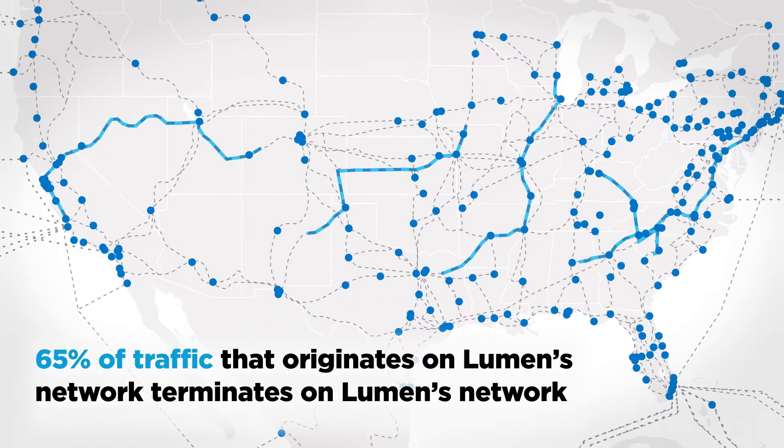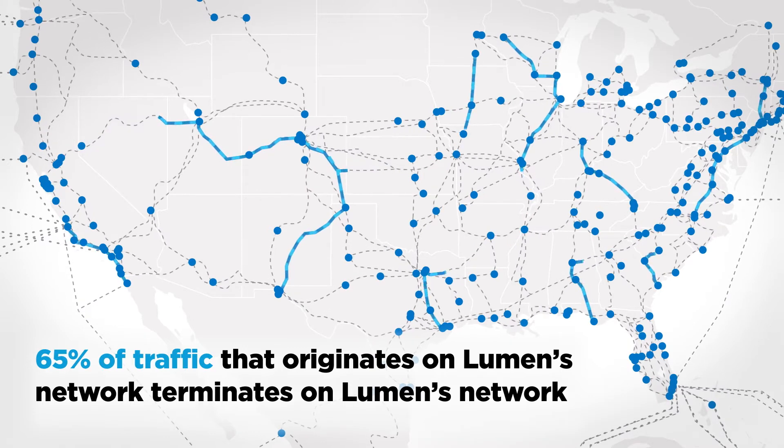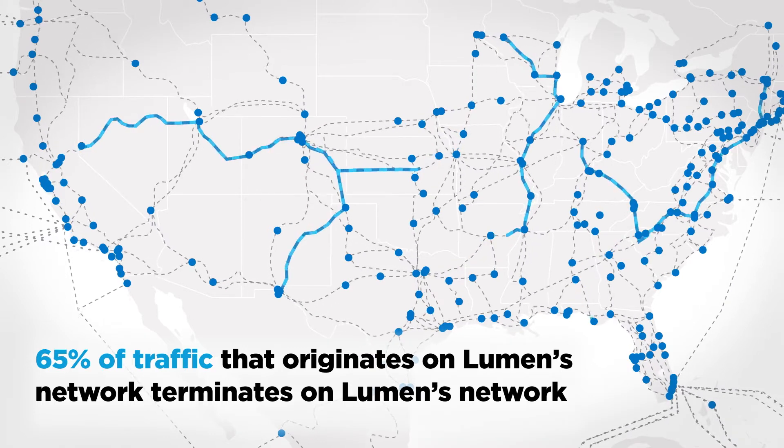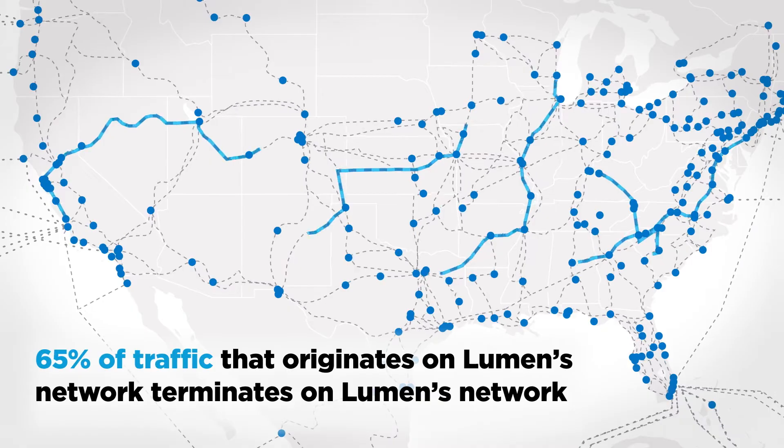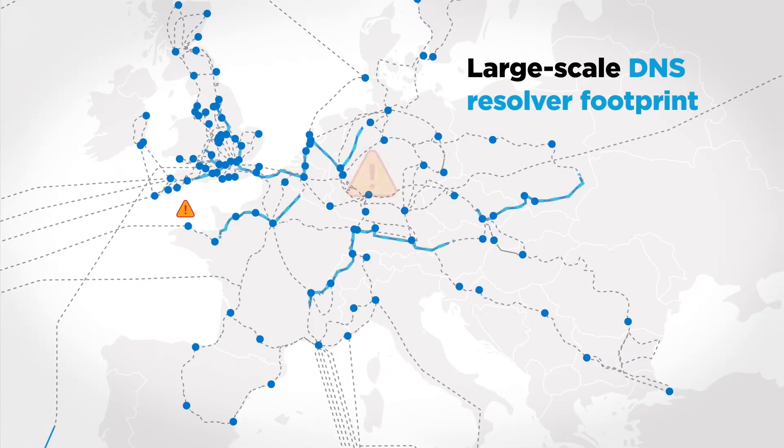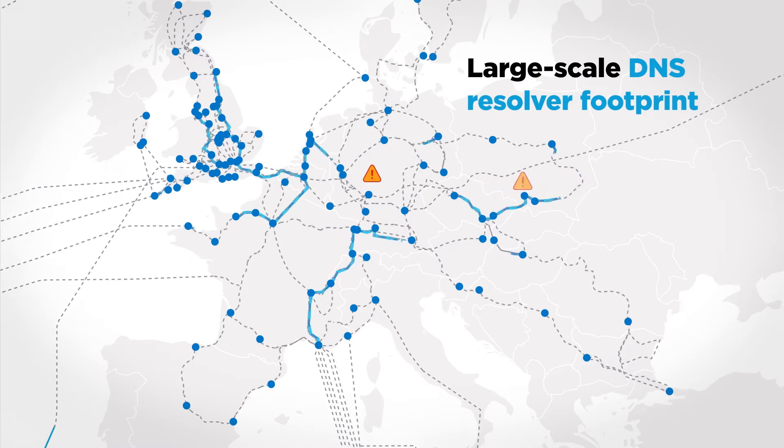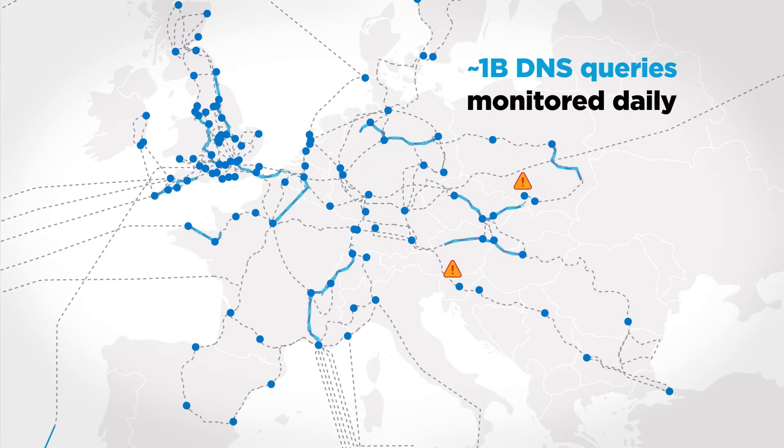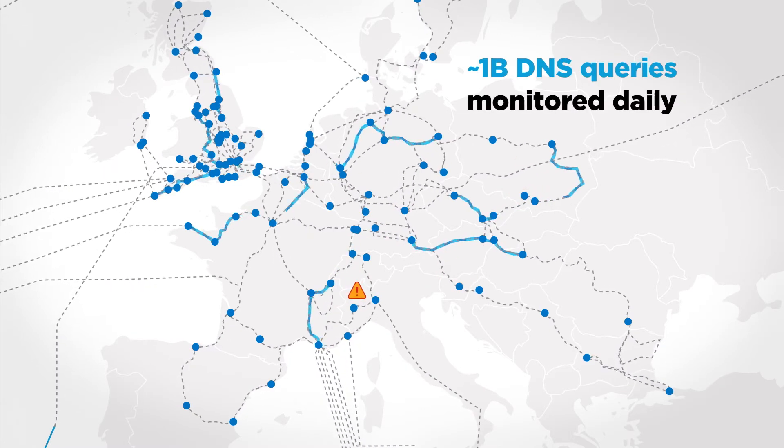Sixty-five percent of traffic that originates on Lumen's network terminates on Lumen's network, which means complete end-to-end visibility. That scale, in combination with Lumen's own DNS resolvers, allows Black Lotus Labs to use the Lumen internet backbone to see malicious activity before many other companies.